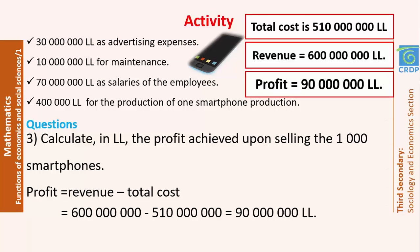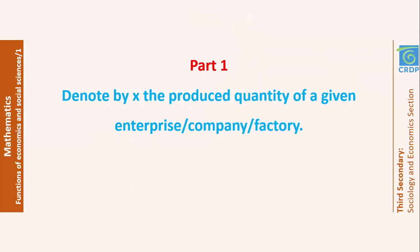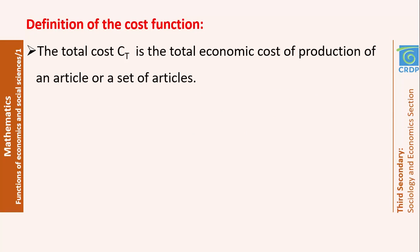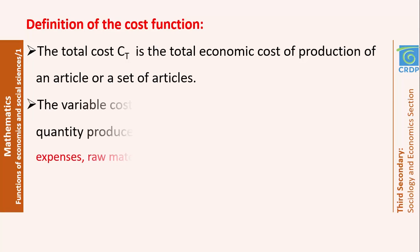This was a numerical example. Let's now generalize this idea and consider that an enterprise is producing X items, and talk about the different cost functions. Denote by X the produced quantity of a given enterprise. The total cost function is the total economic cost of production of an article. There is one type of cost that is independent of the produced items, and there is a type that depends on the number of produced items. All these costs together make the total economic cost — this is the cost function.